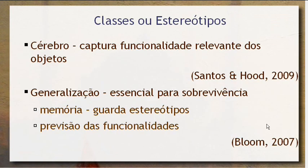Isso faz parte de um processo do cérebro em que ele é capaz de capturar o que é a funcionalidade relevante dos objetos — o que, na verdade, é o essencial, o fundamental de cada objeto. Na hora que você captura isso, você usa isso para duas coisas muito poderosas. Primeiro, para a memória: o que acontece no dia a dia é que você guarda os estereótipos e guarda as variações que cada estereótipo tem sobre aquele modelo inicial. E você usa os estereótipos também para fazer o que a gente chama de previsão das funcionalidades. Por exemplo, quando você vê uma caneca nova, que nunca viu na sua vida, você vai encaixar naquele estereótipo e vai ser capaz de saber o que fazer com ela, porque você simplesmente está reaplicando o conhecimento que você já tinha.